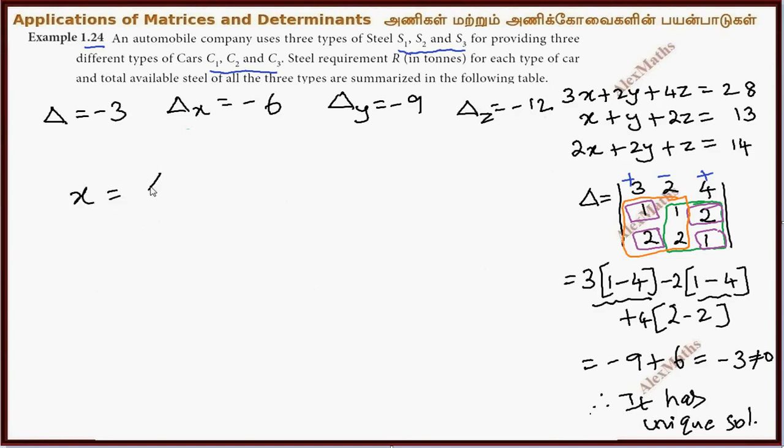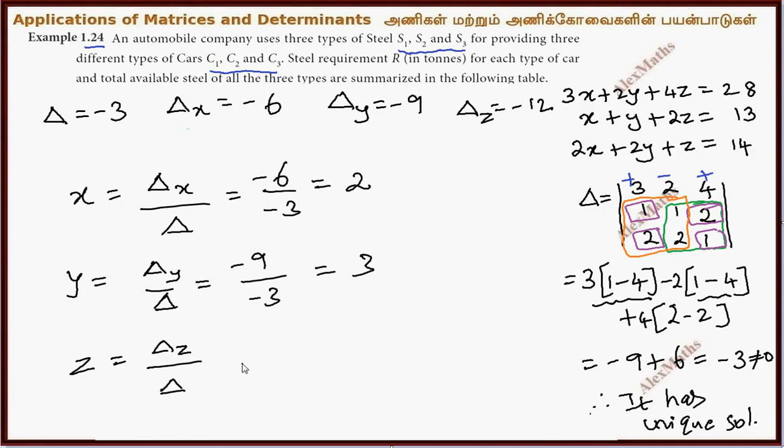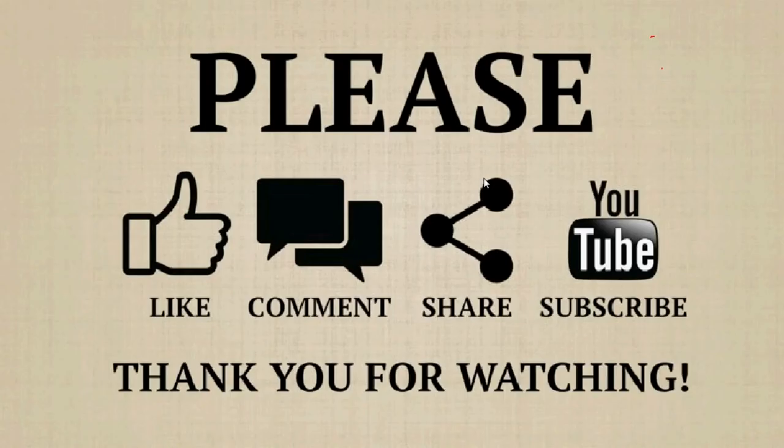Now, this is the formula by Cramer's rule: x equals delta x by delta, minus 6 by minus 3 which is 2. y equals delta y by delta, minus 9 by minus 3 which is 3. That means z is delta z by delta, minus 12 by minus 3 which is 4.